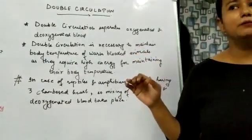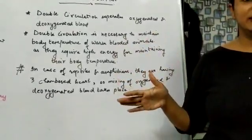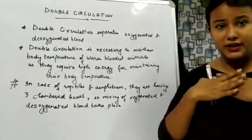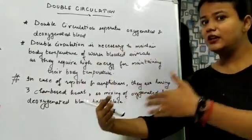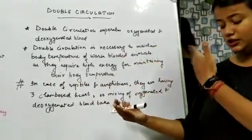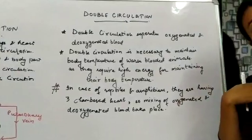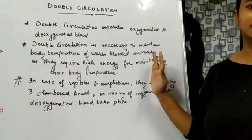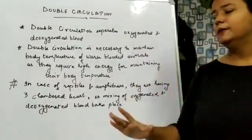For example, agar bahar external temperature 20 degree Celsius hai, aur meri body ka temperature 37 degree Celsius hai — toh heat garam se thand ki taraf jayegi, 37 degree se 20 degree tak. Meri body heat loss karti rehti hai. Par mujhe apna temperature 37 degree Celsius hi rakhna hai. So meri body bahut zyada kaam karti hai issi temperature ko maintain karne ke liye.